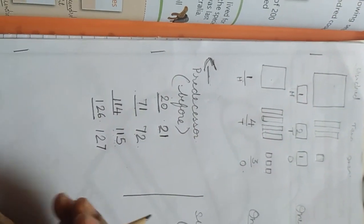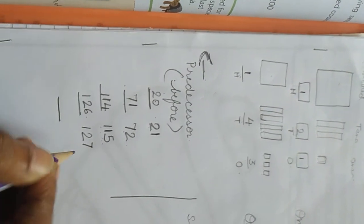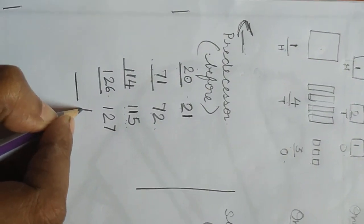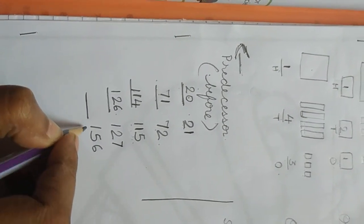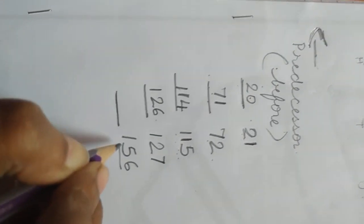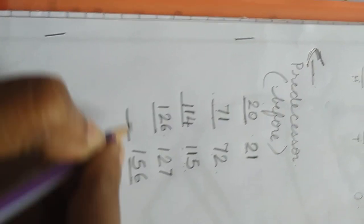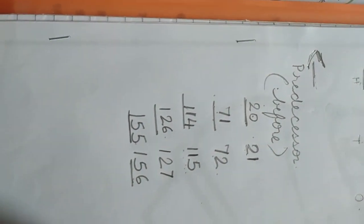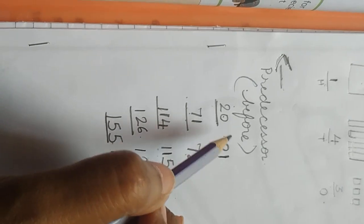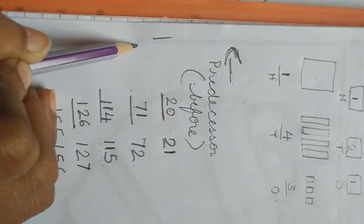Okay. So one more sum — 156. Before 156, which number? Number 155. So what are predecessor numbers? They are before numbers. And what are successor numbers? After numbers.